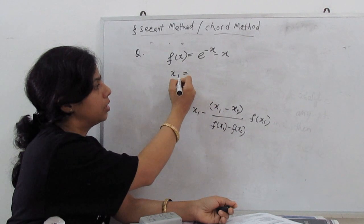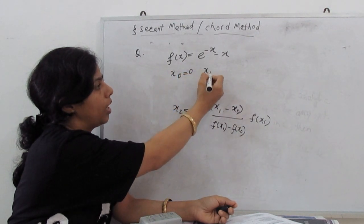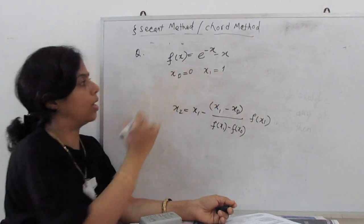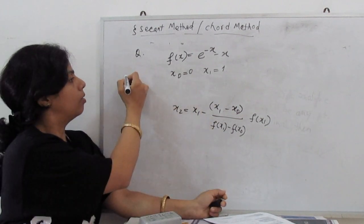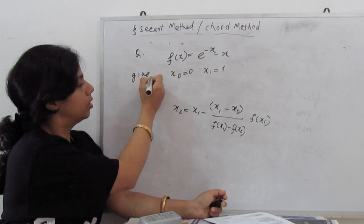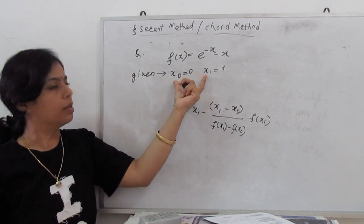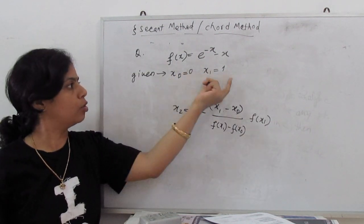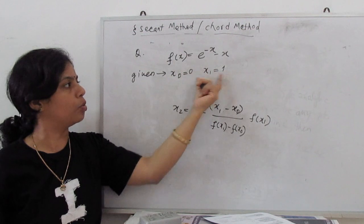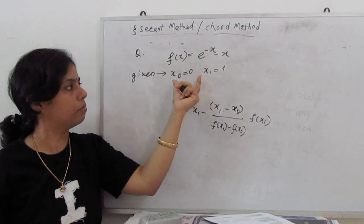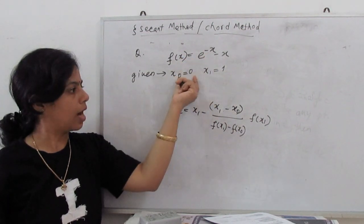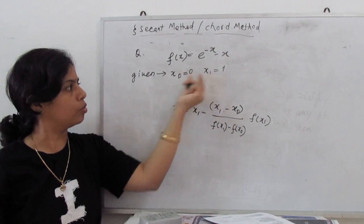The initial guesses are x_0 = 0 and x_1 = 1. They give us these two values, and one root of this equation lies between them. We start with these values and substitute them into the formula.